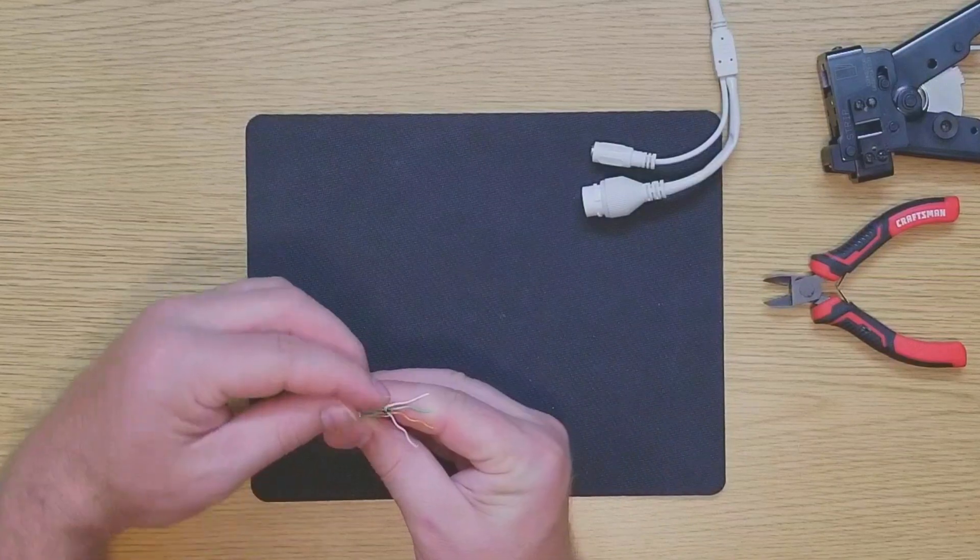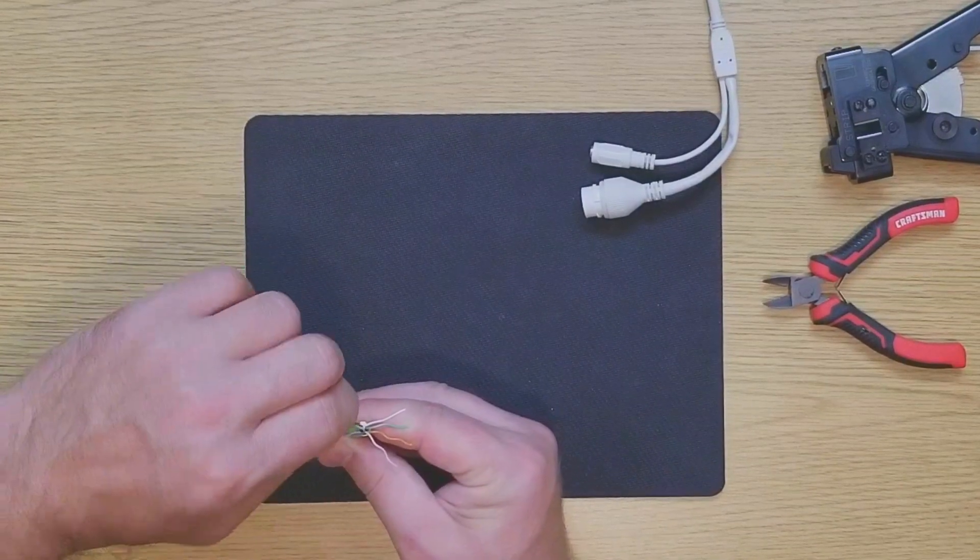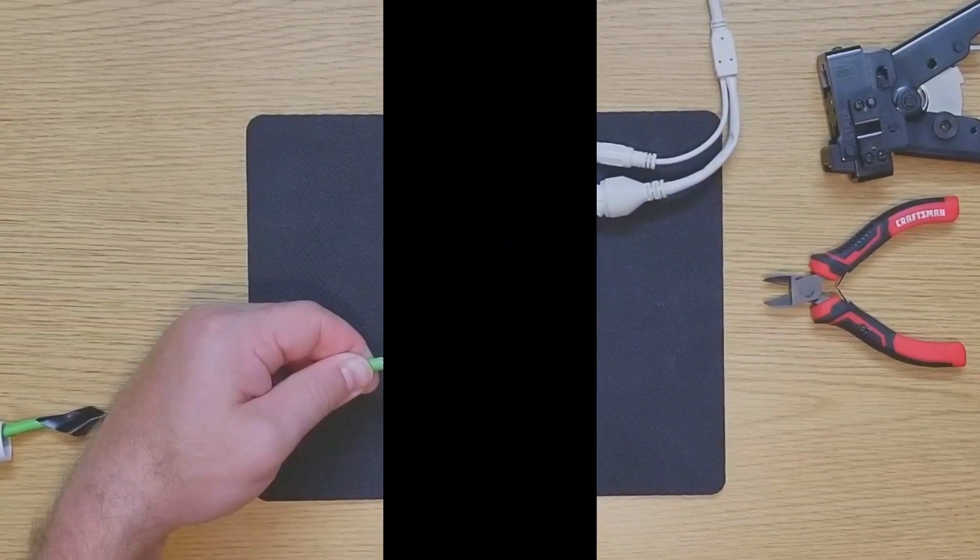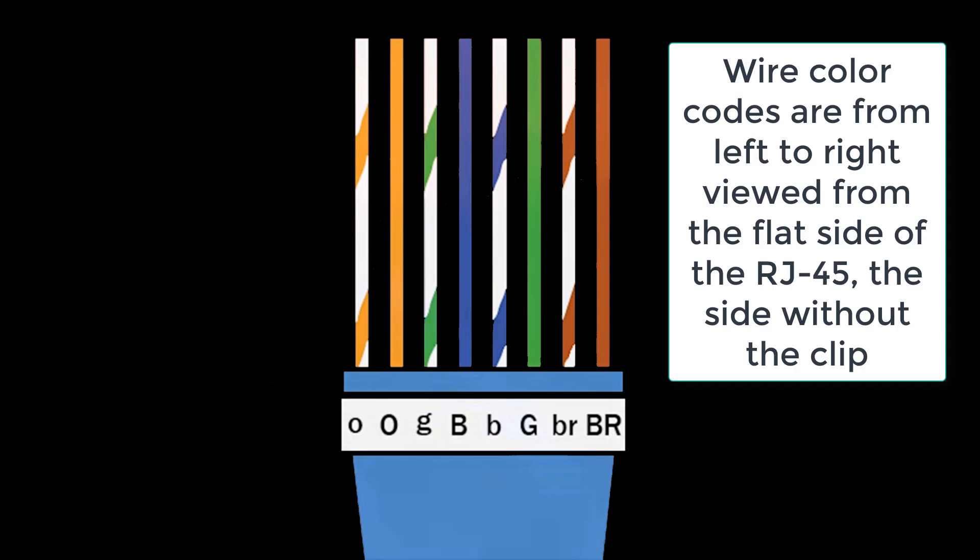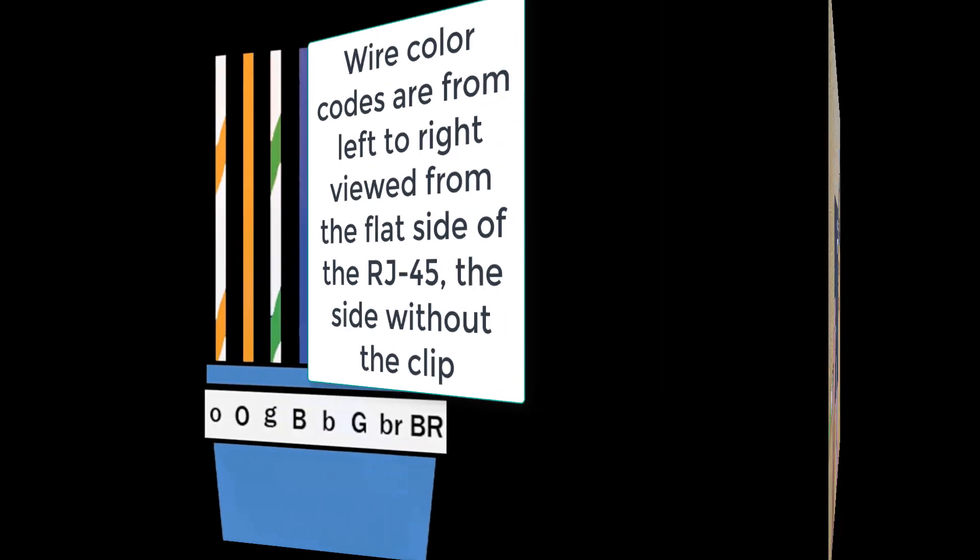Start putting your pairs together based on standard ethernet cabling color coding. If you're not familiar with those color codes, they are as follows from left to right as viewed from the flat side of the RJ45 connector: white orange, orange, white green, blue, white blue, green, white brown, brown. Many of the ethernet cables today, the white wires do not have the colored stripe on them, so as you're untwisting the pairs, be sure to keep track of the white wire and the colored pair that it was originally associated with.